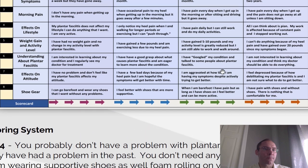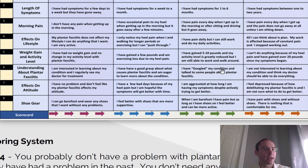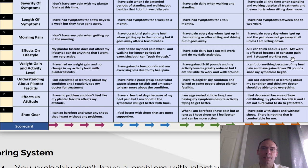Scorecard number four, effects on lifestyle. Score 1, 2, or 3: my plantar fasciitis does not affect my lifestyle. I can do anything that I want. I am very active. Score 4, 5, or 6: I only notice my heel pain when I am walking and for longer periods of exercising, but I can push through it. Score 7, 8, or 9: I have pain daily, but I can still work and do my daily activities. Score 10, 11, or 12: all I can think about is pain. My work is affected because of constant pain, and I stopped working out.